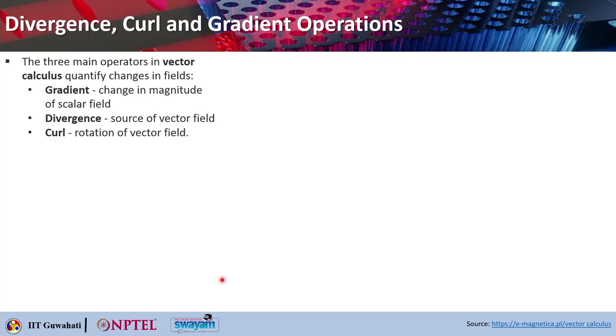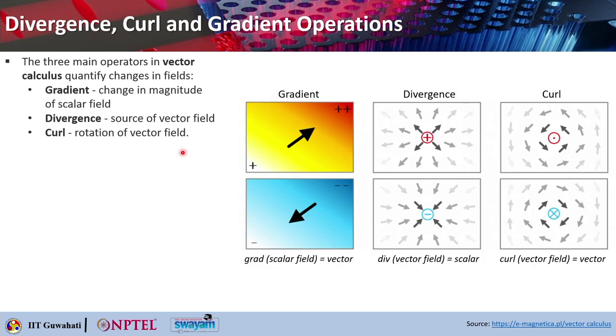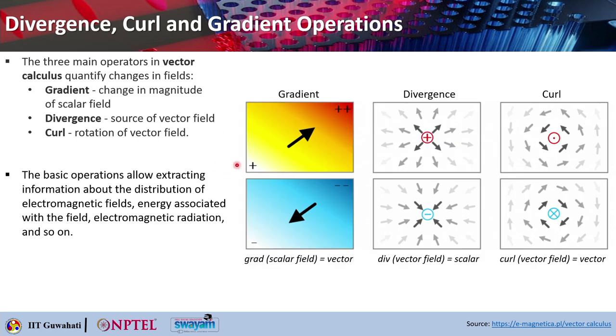Before proceeding to Maxwell's equations, we need to review important operators in vector calculus: gradient, divergence, and curl. Gradient tells you about the change in magnitude of a scalar field; divergence tells you about the source of a vector field; and curl tells you about the rotation of a vector field. These operations allow extracting information about the distribution of electromagnetic field and energy.